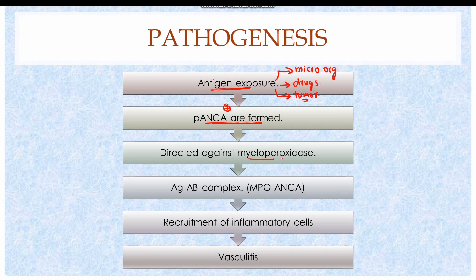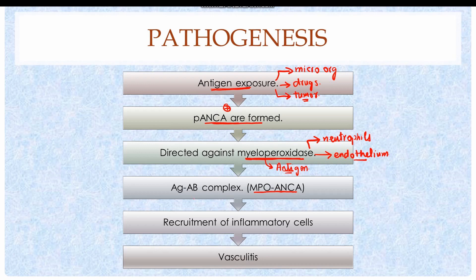The P-ANCA antibodies are directed against the myeloperoxidase enzyme, which is expressed in neutrophils as well as on the endothelium of blood vessels. This myeloperoxidase acts as a newly formed antigen, and ANCA antibodies form antigen-antibody complexes with the myeloperoxidase, hence forming myeloperoxidase-ANCA complexes. These antigen-antibody complexes result in the recruitment of inflammatory cells such as neutrophils, eosinophils, and mononuclear cells to the site, causing inflammation of the arterioles, capillaries, or venules, resulting in vasculitis known as microscopic polyangiitis.